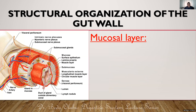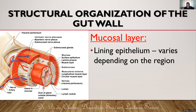The mucosal layer is the innermost layer of the GIT wall, basically made up of lining epithelium. The type of epithelium varies depending on the region of the GIT. Those regions that experience a lot of friction — like the oral cavity, esophagus, and anal canal — will have stratified squamous epithelium.